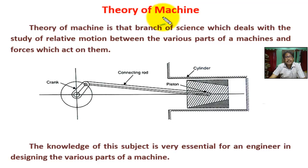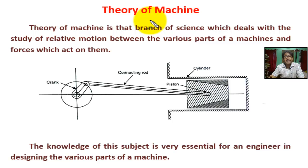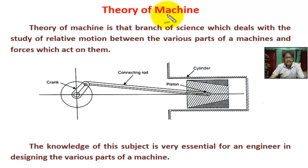What is a machine? A machine transforms available energy from one form to another to do a certain desired work. For example: pedal engine, steam engine, diesel engine, etc.